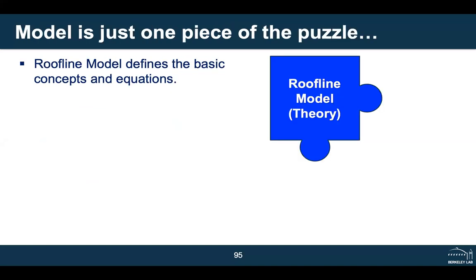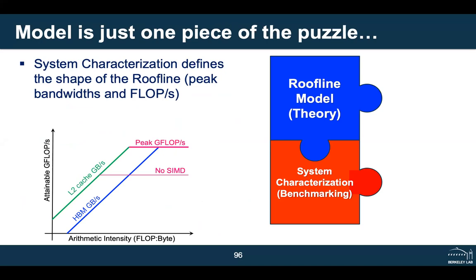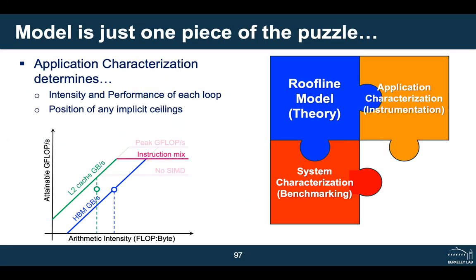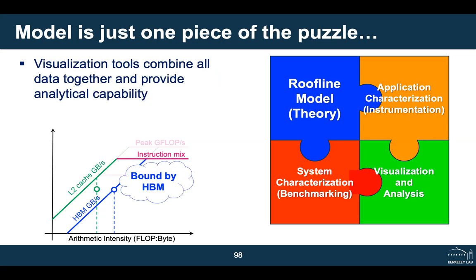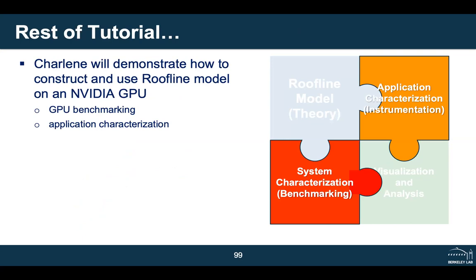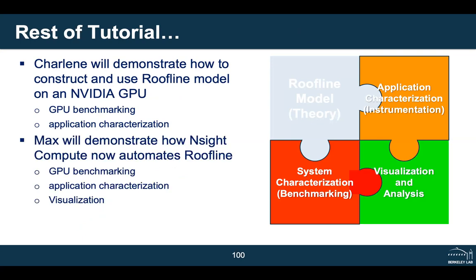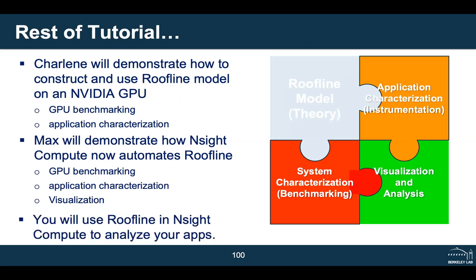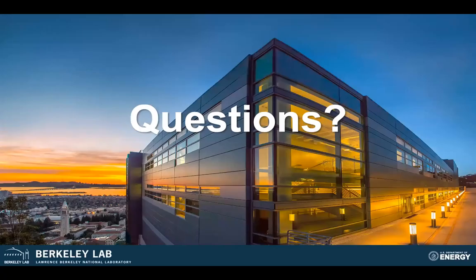The roofline model is useful for understanding differences between architectures, programming models, and implementations, and for predicting performance on future machines. It allows setting realistic performance expectations — knowing whether more bandwidth, more compute, or better instruction issue rates are needed. It's also useful for identifying performance bottlenecks and knowing when to stop optimizing. When you are within about 90% of the roofline limit, you need algorithmic changes to make further progress. The model requires system characterization to define lines, application characterization for dots, and a visualization/analysis tool to tie it all together.